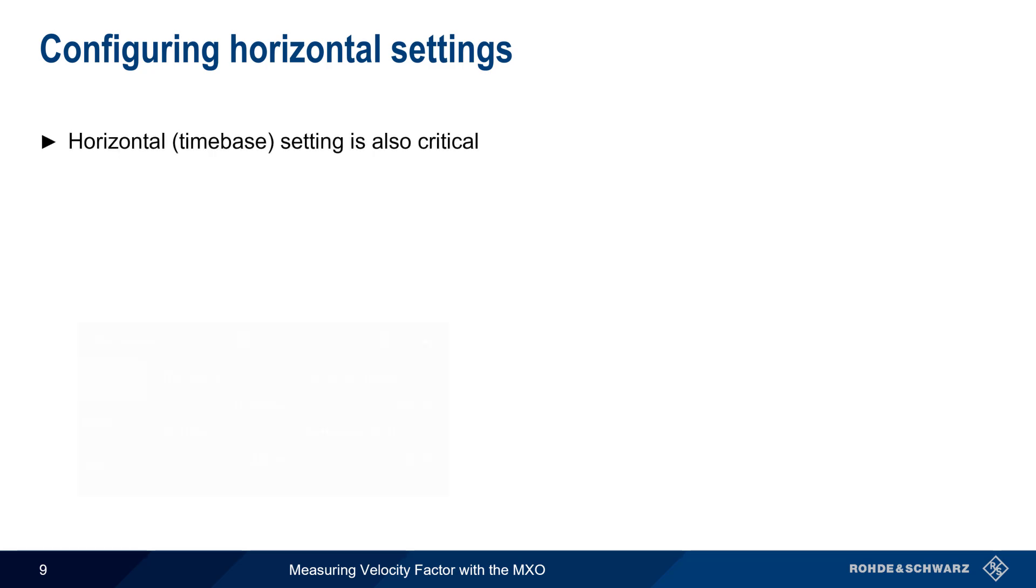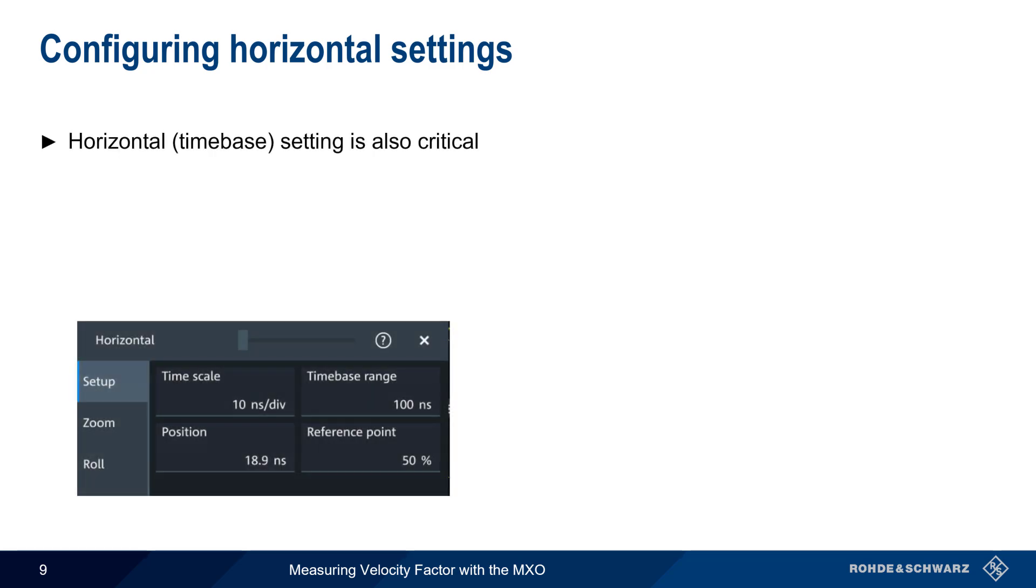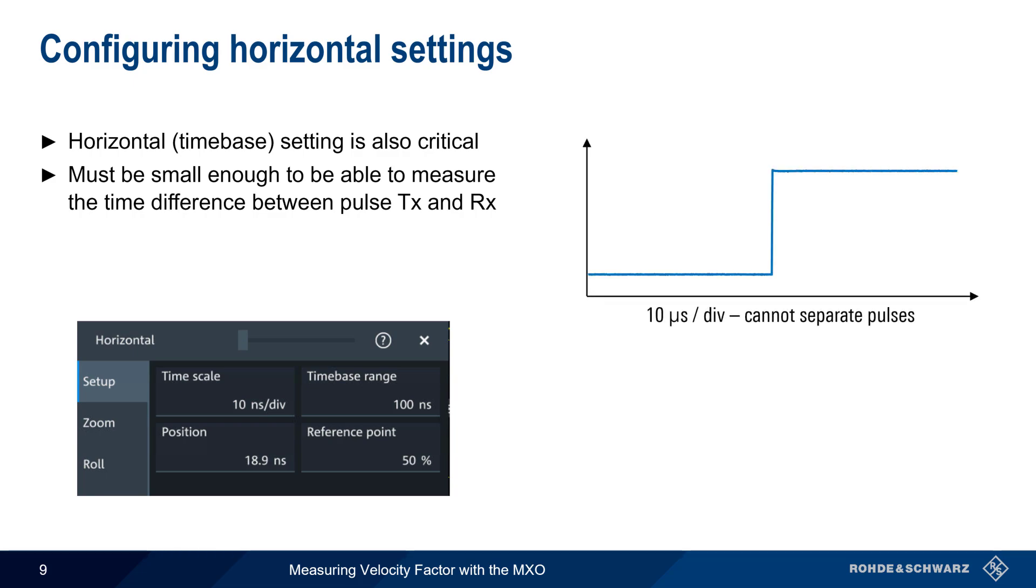The horizontal or time base setting, that is seconds per division, is also crucial when measuring velocity factor. The time base must be set small enough to measure the time between when the pulse was transmitted and when the reflected pulse was received. If the time base is set too large, as shown in this example, it may be impossible to visually separate the transmit and receive pulse.